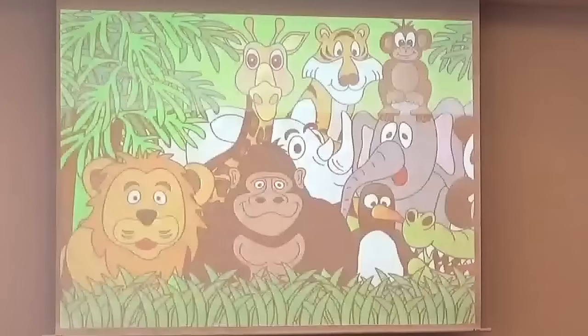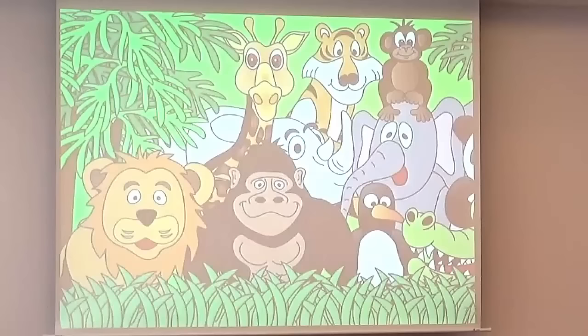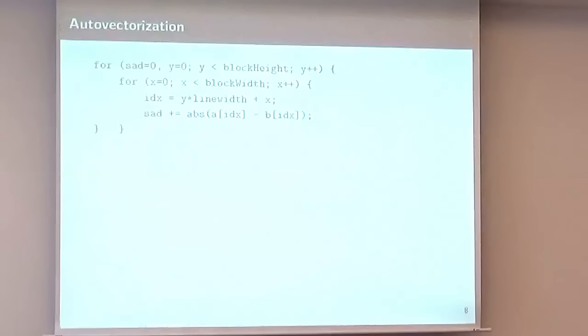There's kind of a zoo of vectorization methods, and each has its right to be here, but not every vectorization method might be useful for your use case. You might want to start with a naive approach. This is now the calculation of the sum of absolute differences for one block. You iterate over the block height and the block width. Imagine that A and B are pointers to the upper left corner of your blocks, and then you simply accumulate the absolute difference.